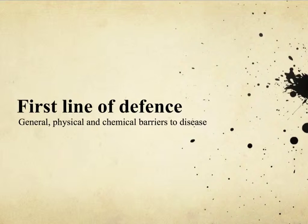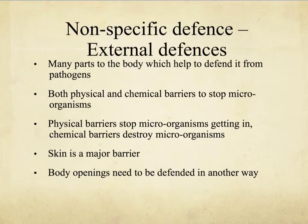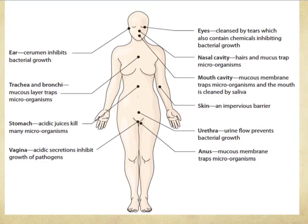Now we're going to review the first line of defense — the physical and chemical barriers to disease, everything that prevents pathogens from entering inside the cells. Lots of parts of the body are part of the external defense system. Chemical barriers are actually able to destroy microorganisms, whereas physical barriers stop them from getting in. Skin is the first major barrier, but openings to your body must be defended in other ways.